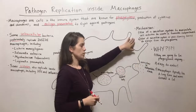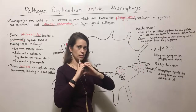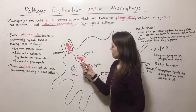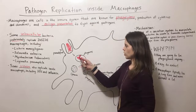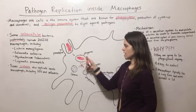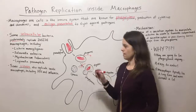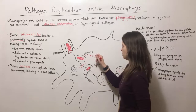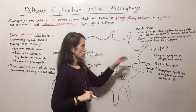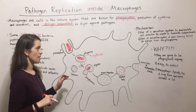Another possible mechanism is the use of either a secretion system or a pore-forming toxin — a toxin that creates pores in a membrane — to escape from the phagosome. That means a bacterium would use a secretion system or pore-forming toxins to poke holes in the phagosome membrane so that it can escape the phagosome and then replicate in the cytosol.